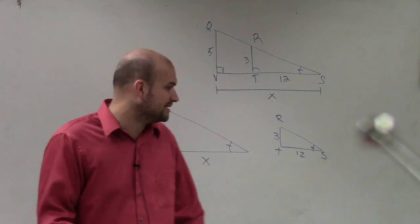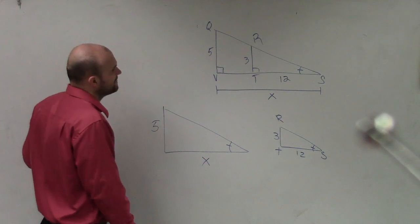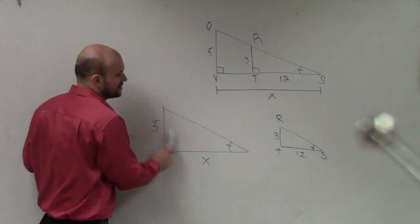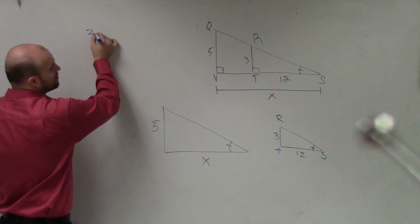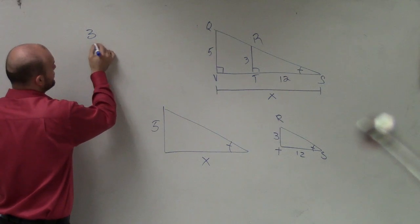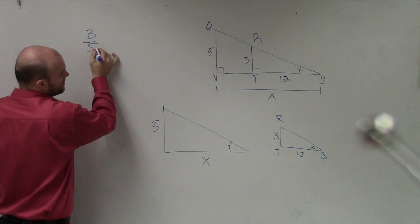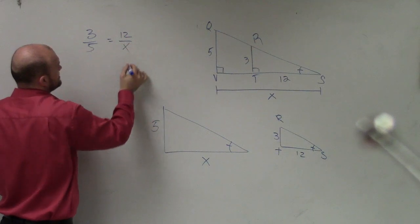However, another way to do it would be to say, well, if I can show that these two sides are congruent and these two sides are congruent. So just to do it this way real quick, I could always write a proportion as 3 is to 5 as 12 is to x.